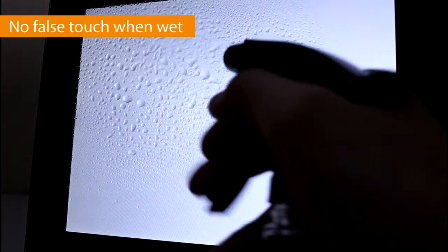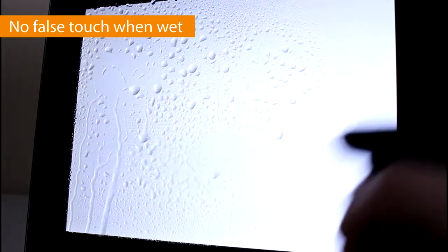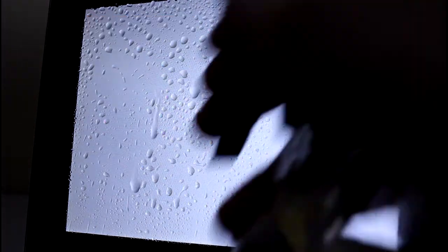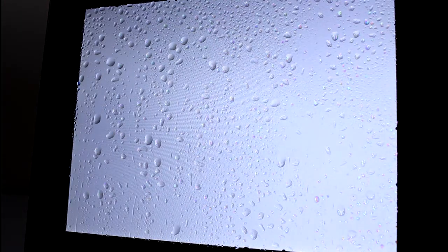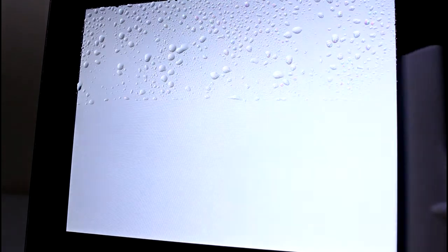We spray water onto the touch panel surface. As you can see, even if a large amount of water is sprayed, the touch panel does not generate false touch points. At this time, the controller automatically disables touch operation. Once the water has been dried, touch functions recover automatically. This is WD mode.